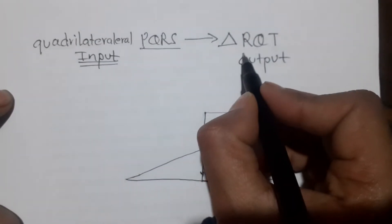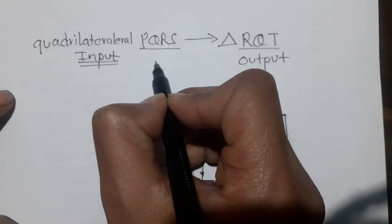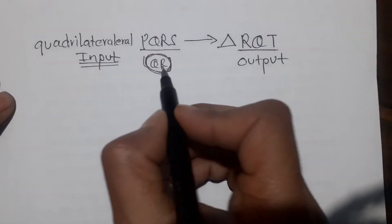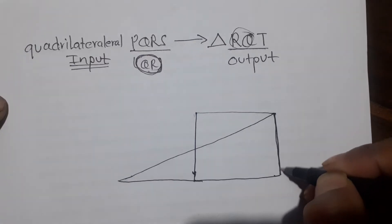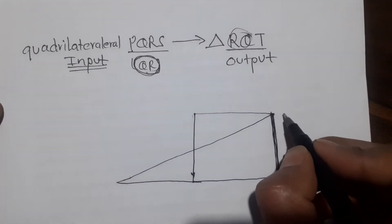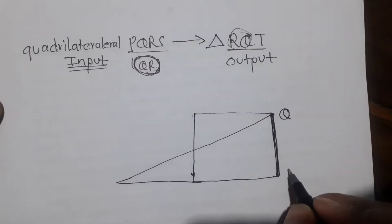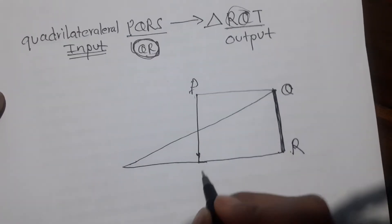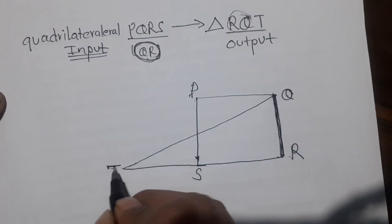We want to have QRS on RQT so they have a common side. This name QR is an important factor. If you look at the name of RQ, make sure QR is the shared base. QR is here, P is here, clockwise PQRS is here — so this is the rough figure. The triangle is here, and T is definitely here. So this is the construction.